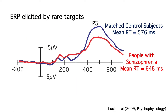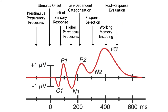But behavioral response times are also measured with millisecond temporal resolution. The mean RTs in this experiment were about 70 milliseconds slower in the schizophrenia group than in the control group — that's millisecond-level temporal resolution. So how is the temporal resolution of the ERP technique any different from the temporal resolution of response time? The answer is that ERPs provide a continuous measure of activity at each moment in time.